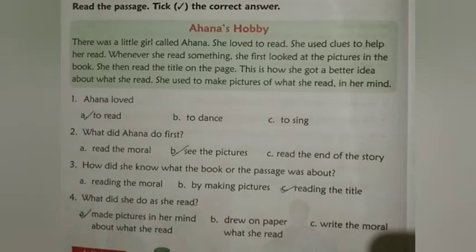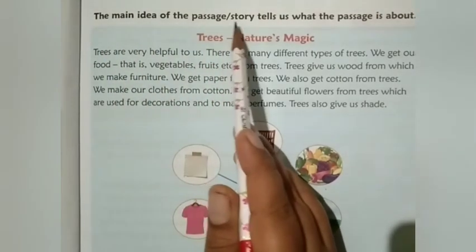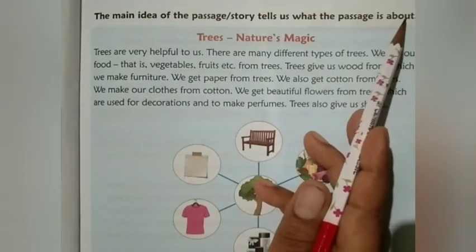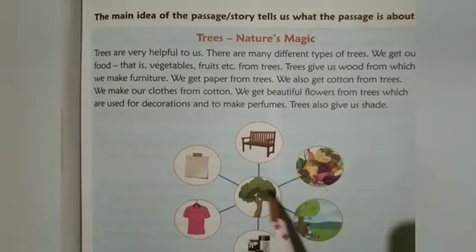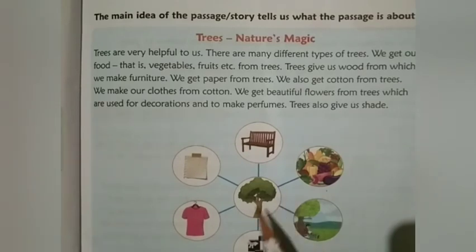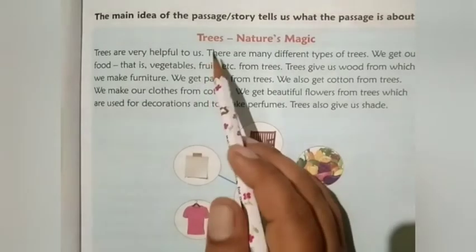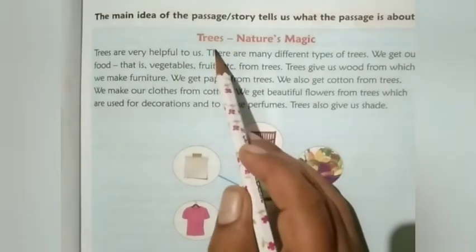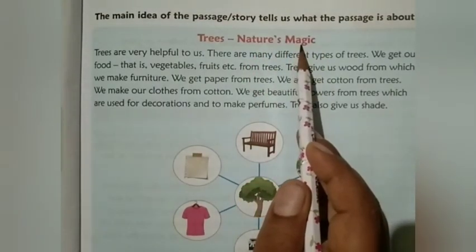Now let us see Activity 2. The main idea of the passage or story tells us what the passage is about. In this passage there are pictures, so first I see the pictures and get an idea — this passage is about trees and the uses of trees. Then I read the title: the title name is 'Trees: Nature's Magic.'